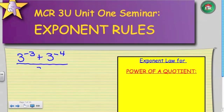Whenever you have a question like this, you'll be able to identify it by, first of all, the fact that it is a quotient. We have the numerator and the denominator, as well as the fact that all of the bases are the same.